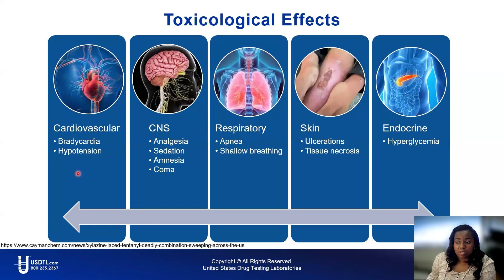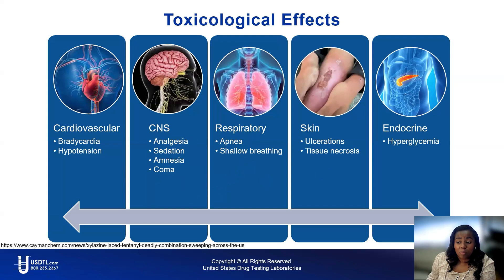Xylazine's effects on the cardiovascular system can cause bradycardia, a reduction in heartbeats per minute. Additionally, as an alpha-2 adrenergic agonist, it causes low blood pressure. Xylazine depresses the central nervous system and the respiratory system. It acts as an analgesic or painkiller, which can lead to sedation, amnesia, and coma-like symptoms. It can also greatly slow and shallow the breathing. Topically, chronic use of xylazine has a vasoconstrictive effect on local blood vessels, particularly those used for intravenous administration, leading to reduced proliferation, skin ulcers, tissue necrosis, and an increased risk of infection. Additionally, xylazine can elevate blood sugar levels, which is a notable endocrine effect.